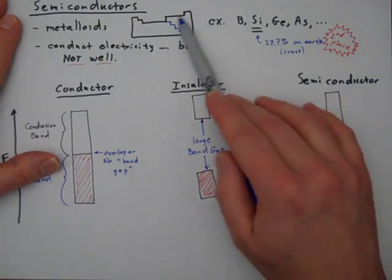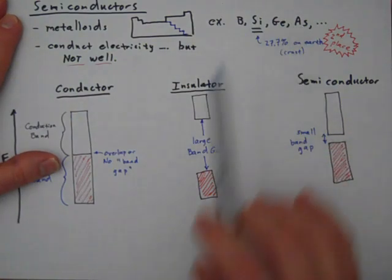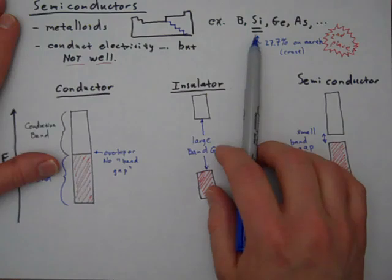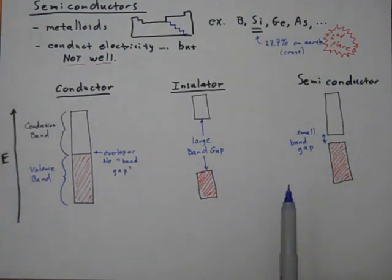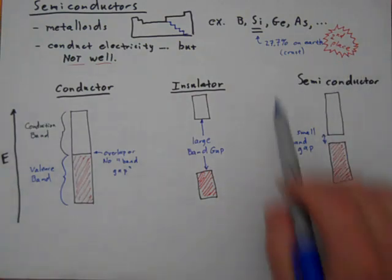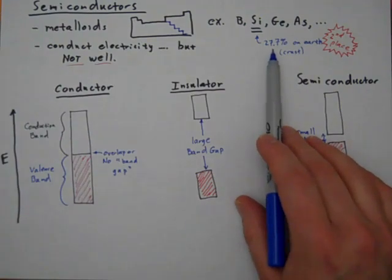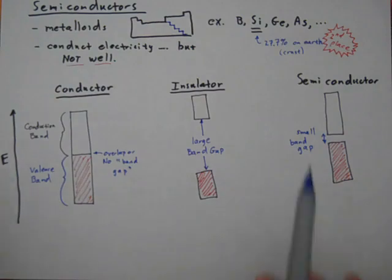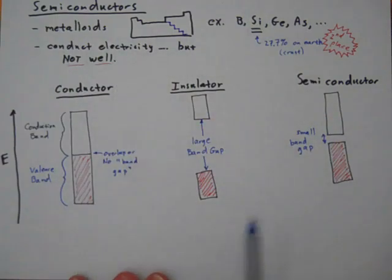Some examples, boron, silicon, germanium, arsenic. Silicon I've underlined because it's a very important metalloid. It actually accounts for about 27.7% of the elemental mass on Earth's crust. So it's sort of second place. So it gets the second place prize. So oxygen is actually first. So it makes up a whopping amount of Earth's crust. And it's a principal component of rocks. So silicon and oxygen are found in rocks a lot. So silicon is very important. And it is a metalloid.